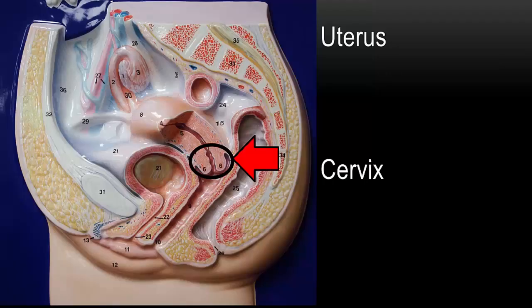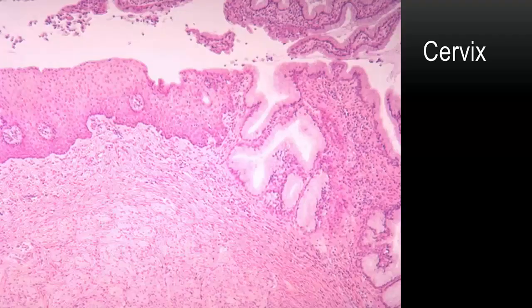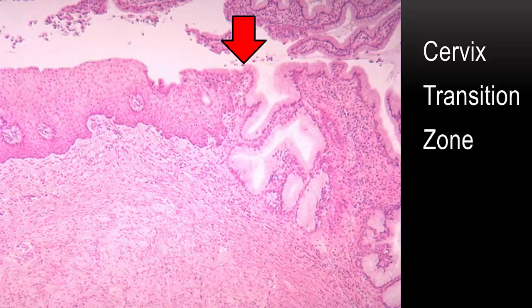Let's take a look at the lower part of the uterus, the cervix. Here is the histology of the cervix. If you look at the surface, you'll see on the left a squamous epithelium and on the right, simple columnar epithelium. The transition between squamous and columnar epithelium is shown here by the arrow. This area is called the transition zone, and it's important because this is the area that can develop into cervical cancer. This area is sampled when a pap smear is done.